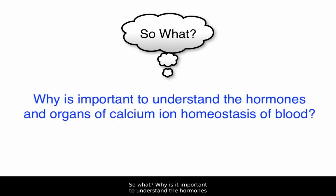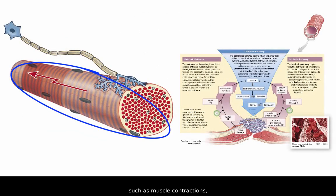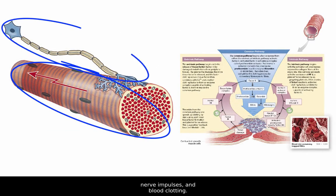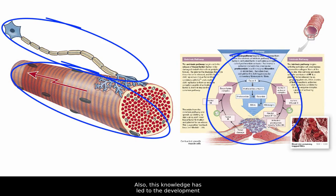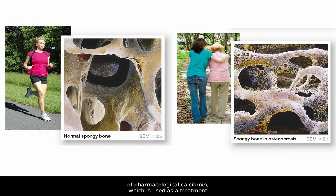Why is it important to understand the hormones and organs involved in calcium ion homeostasis of blood? Calcium is vital to numerous physiological processes, such as muscle contractions, nerve impulses, and blood clotting. Also, this knowledge has led to the development of pharmacological calcitonin, which is used as a treatment for osteoporosis in postmenopausal women because it inhibits osteoclastic activity.